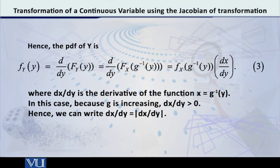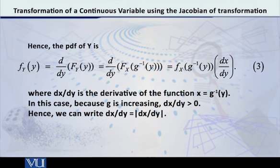Since G is an increasing function, dx/dy is a positive entity. Therefore, the modulus of dx/dy equals dx/dy. So the equation becomes: f_Y(y) = f_X(G-inverse of y) multiplied by the modulus of dx/dy.